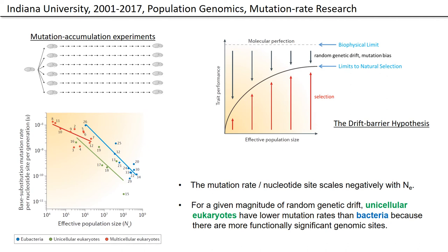These results tie in nicely to an idea that I've been working on for quite a few years — the so-called drift barrier hypothesis. The idea is quite simple: if we think about a trait that's under persistent directional selection and think about different effective population sizes, as we move to the right the efficiency of selection increases. We expect the mean phenotype to be pushed closer to the level of molecular perfection defined by the biophysical limit. As a consequence, we expect there to be gradients of mean phenotypes with respect to effective population size, exactly the kind of thing we see in the lower left-hand panel.